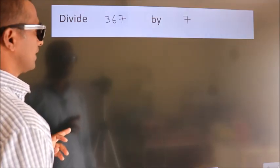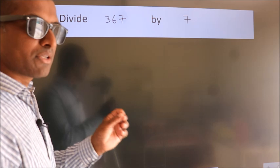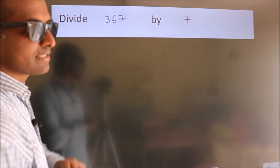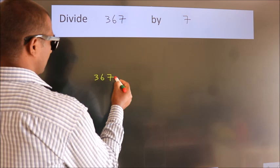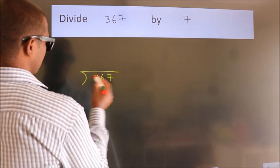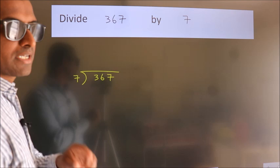Divide 367 by 7. To do this division, we should frame it in this way: 367 here, 7 here. This is your step 1.